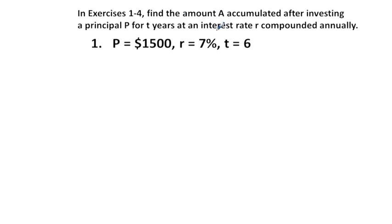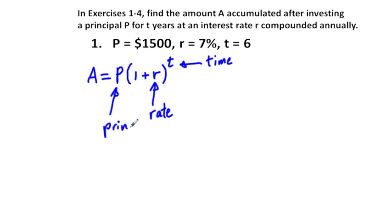Exercise 1-4, find the amount A accumulated after investing a principal P for T years and interest rate R compound annually. The basic formula is A equals the principal, capital P, times 1 plus R to the power of T. This R stands for rate, and T is time, and P is the principal, and then A is going to be our final amount.